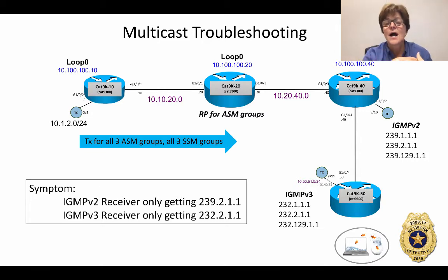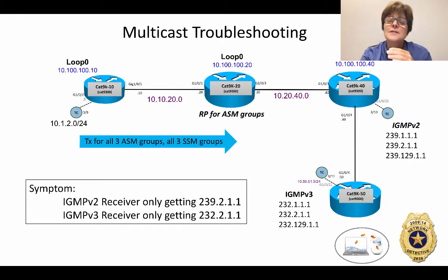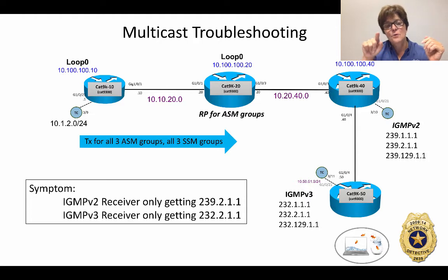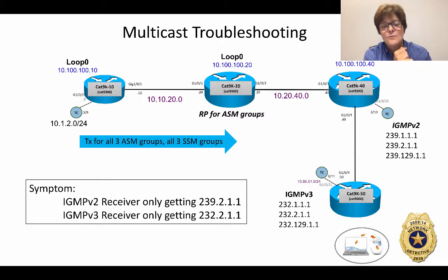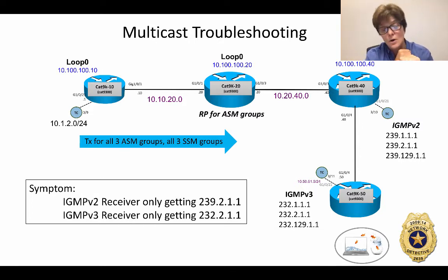The first thing I'm going to do is go to the LHR — the last hop router. I don't really care which one since both are having problems, but I'll pick the IGMP v2 side because I have to get through CAT 9K 40 to reach CAT 9K 50, so it's fewer devices to troubleshoot. I'll go to CAT 9K 40 and do a show IPM route, looking for star-comma-G for all three groups with an OIL on the interface towards the Spirent Test Center — and we will find it there.